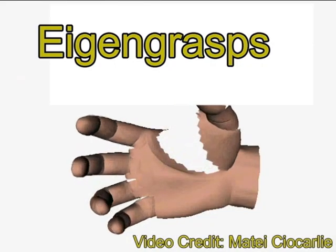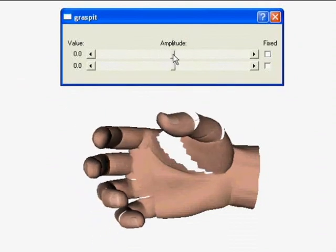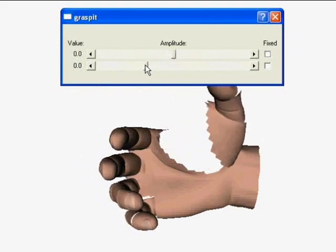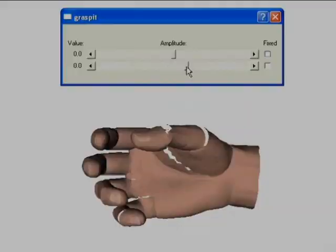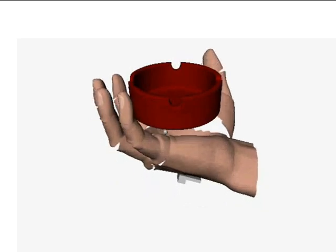In previous work, we have proposed the concept of eigengrasps, a low-dimensional grasping subspace derived from human grasping experiments that has proven useful for grasp planning. Searching this subspace with simulated annealing allows us to find form closure grasps for arbitrary objects using a range of robotic hands.